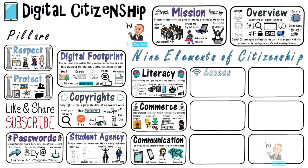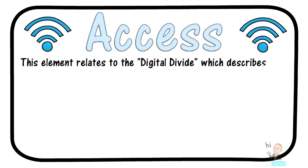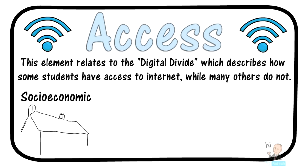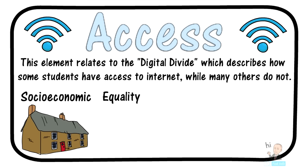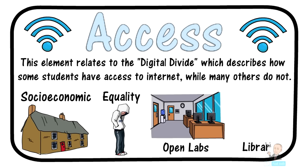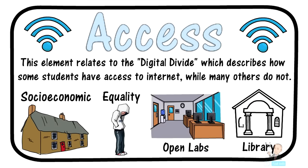Next of the nine elements is access. Access relates to the digital divide, which describes how some students have access to the internet and others do not. Unfortunately, due to socioeconomic factors, not all students will be able to access the internet. Most of us take for granted our access to the internet. Still, in the 21st century, we must aim for equality in terms of internet access. Schools look to tackle this issue by providing open labs to their students, which may mean keeping media centers open after school hours. Even without school help, visiting a library is an excellent option — all you need is a library card.